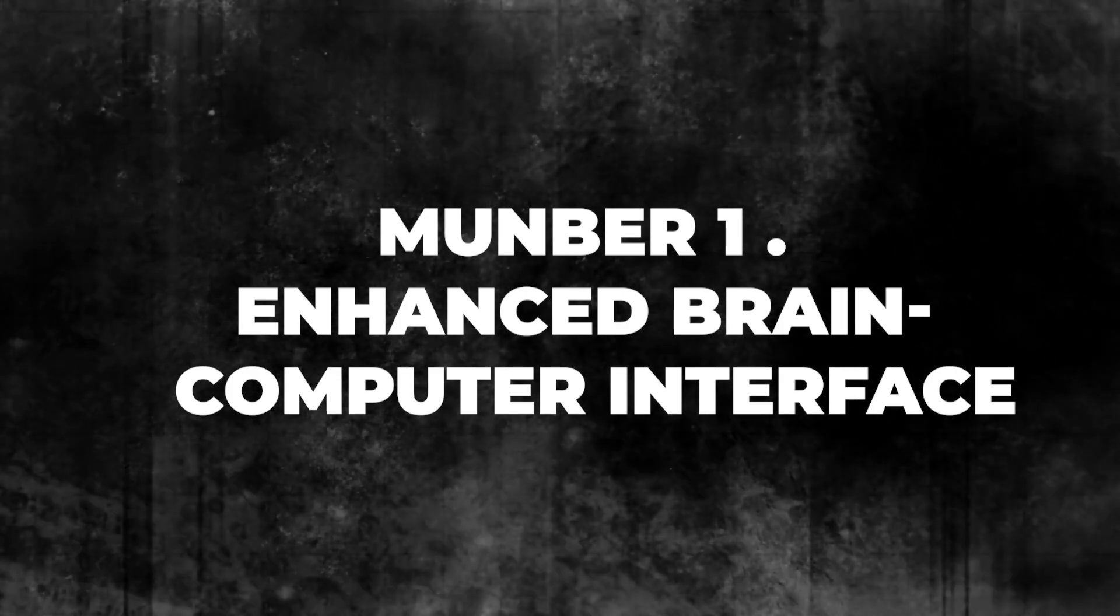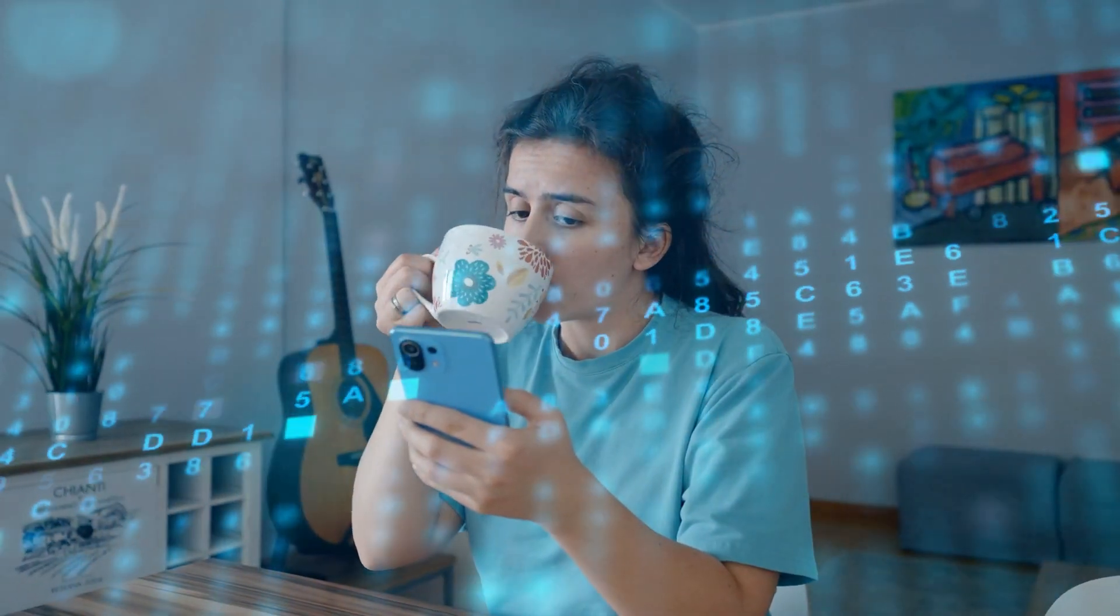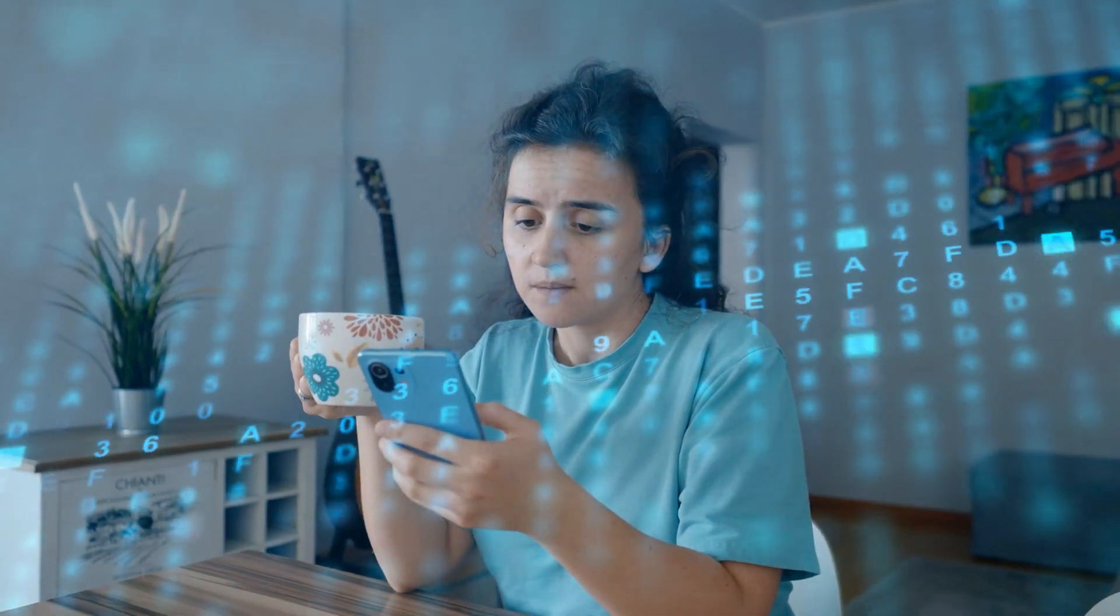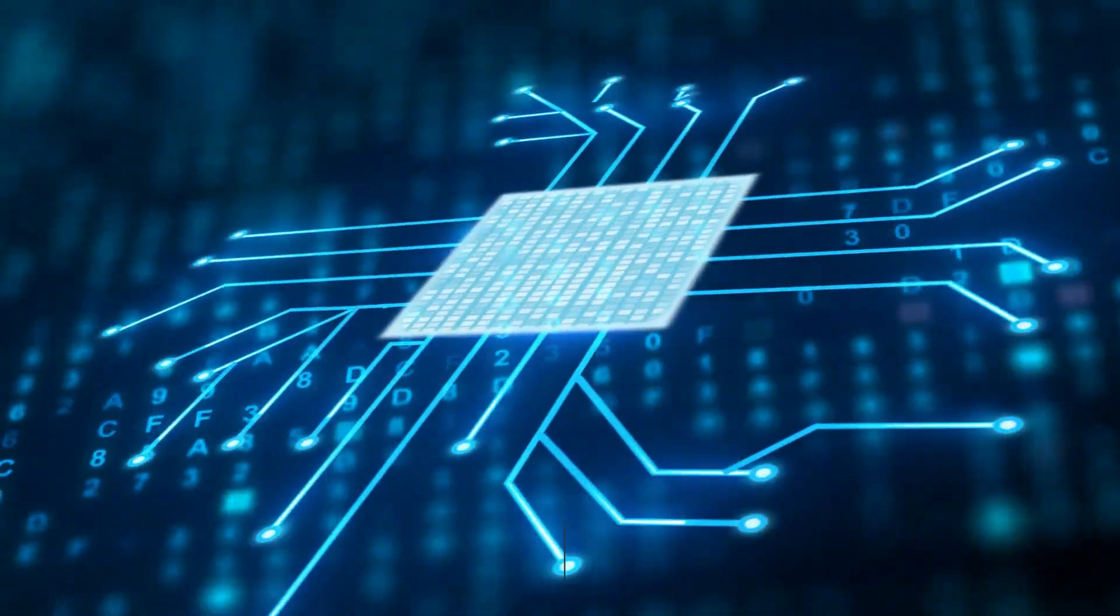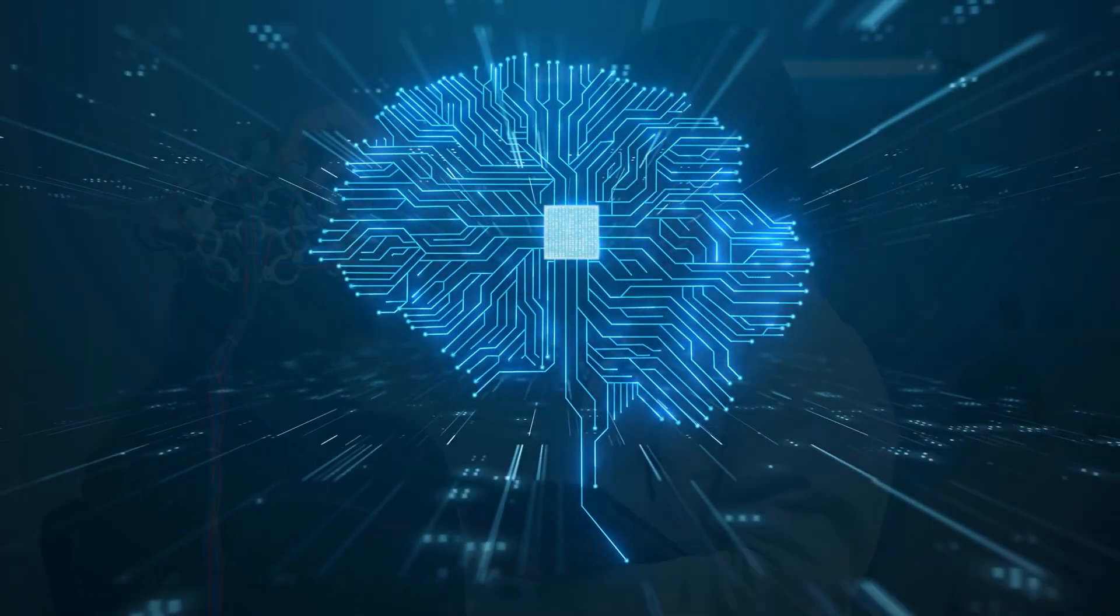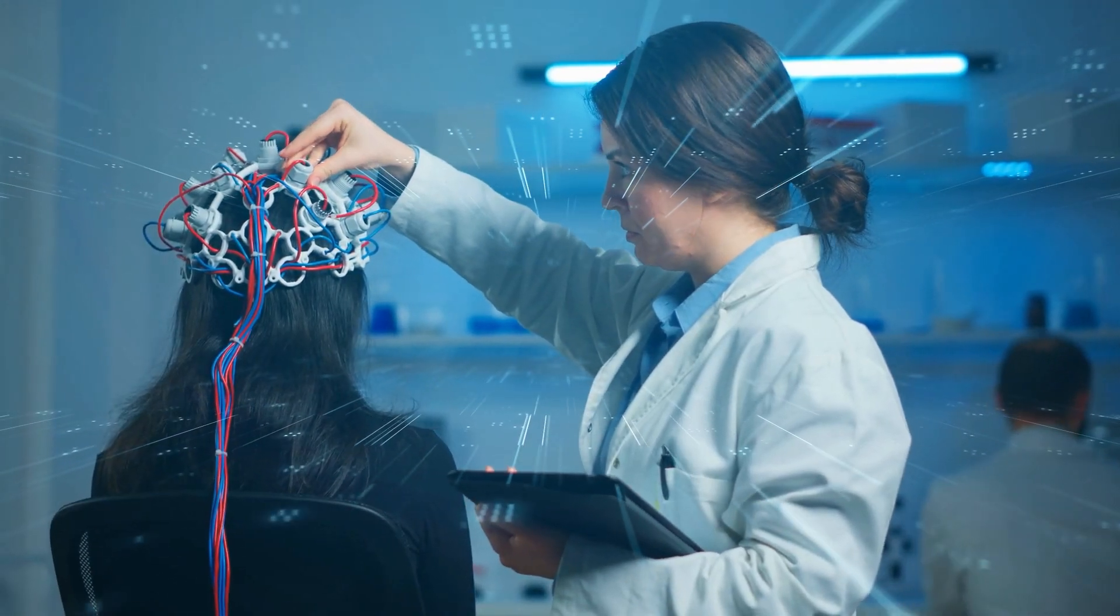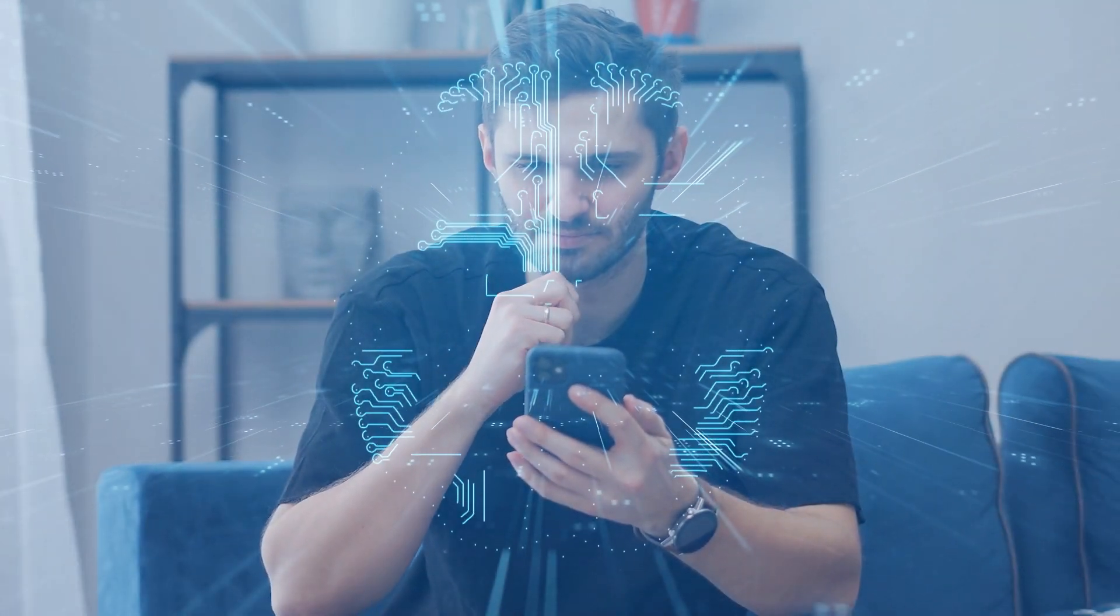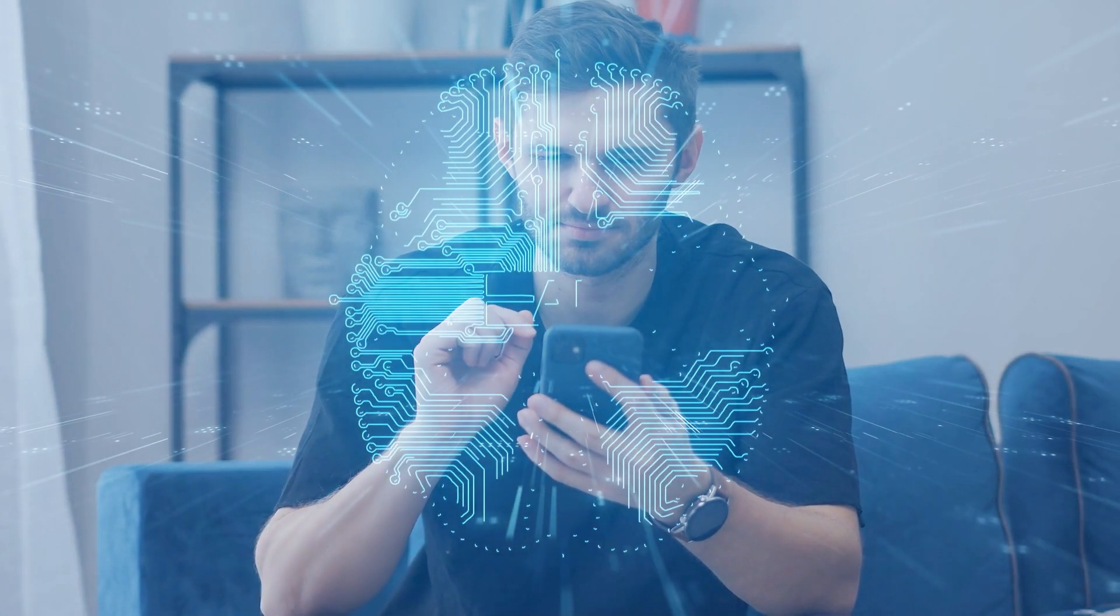Enhanced Brain-Computer Interface. Imagine controlling your phone or computer with just your thoughts. Neuralink's brain-computer interface, BCI, can detect brain signals through tiny electrodes implanted in your brain. These signals are then processed and translated into commands that control your devices, making it as easy as thinking about what you want to do.